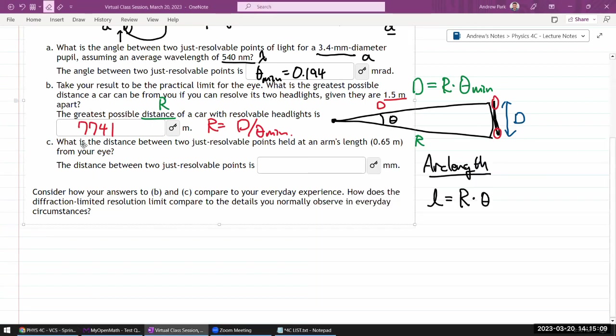So 7.74 kilometers or about 7 to 8 kilometers. What is the distance between two just resolvable points held at an arm's length 0.65 meters from your eye?